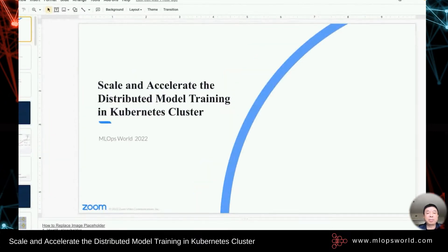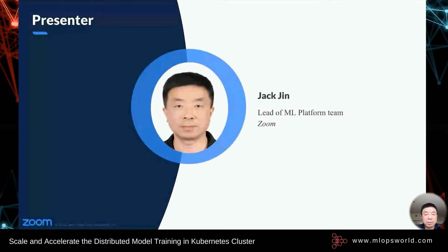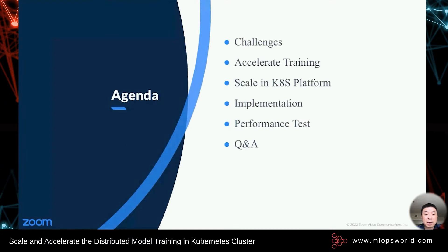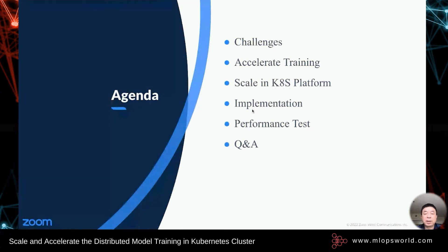My name is Jack Chin, I am a lead of the machine learning platform team at Zoom. Today I'm going to talk about the challenge of why we need distributed model training, how we accelerate training, and how we scale in a Kubernetes cluster. I'll also cover implementation and performance testing. This session targets data scientists and ML engineers for the acceleration section, and MLOps or ML infrastructure engineers for the infrastructure sections.